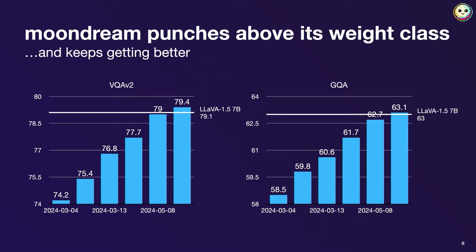I had the audacity to title my talk 'how can a tiny vision model slap so hard,' so I have to back things up a little bit. These are two vision question-answering benchmarks — one is called VQA V2, the other is called GQA. As you can see, Moon Dream has been steadily improving over the releases I've made over the last three months. I've included a reference line for LLaVA 1.5, which is a popular 7 billion parameter vision model. This shows you that Moon Dream gives you performance comparable to models that are about four times bigger than it.